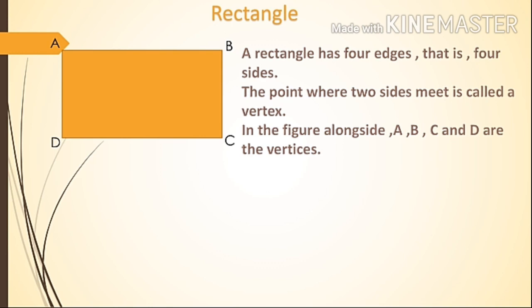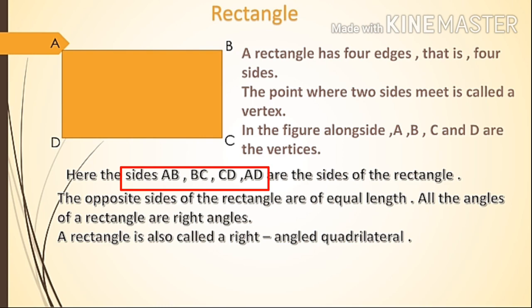Here the sides AB, BC, CD and AD are the sides of the rectangle. Rectangle say shirobindu ka unta hai, do you understand?